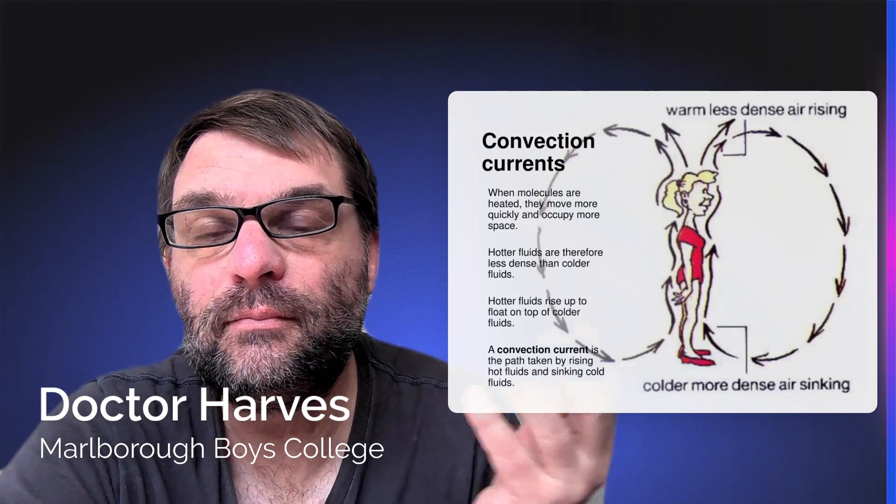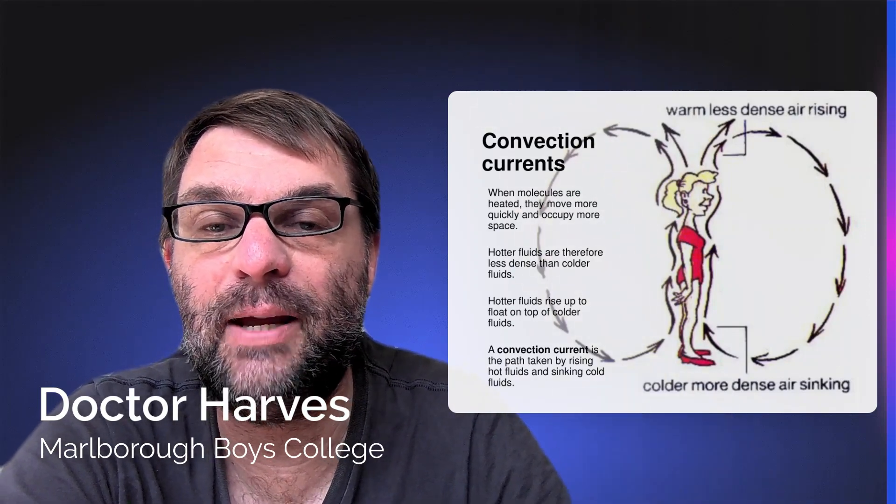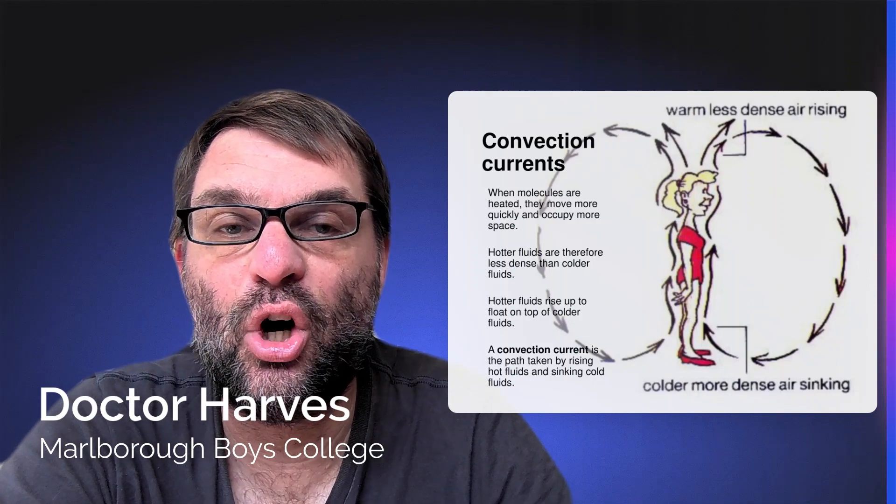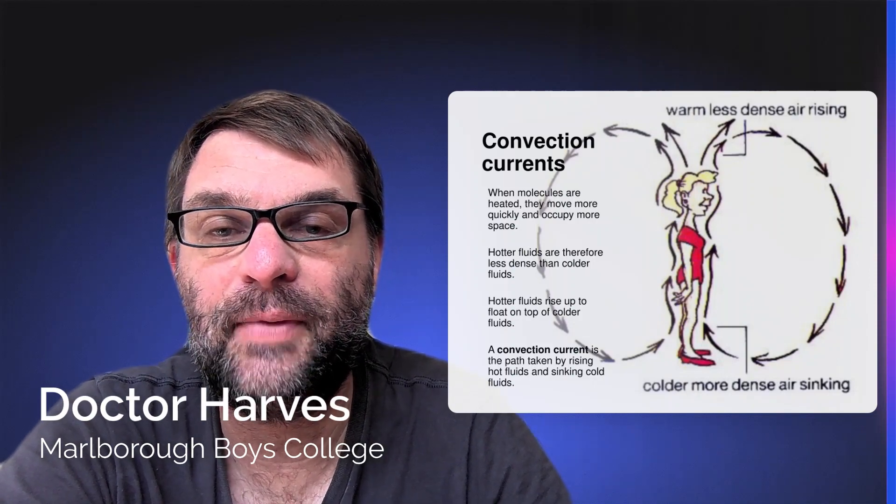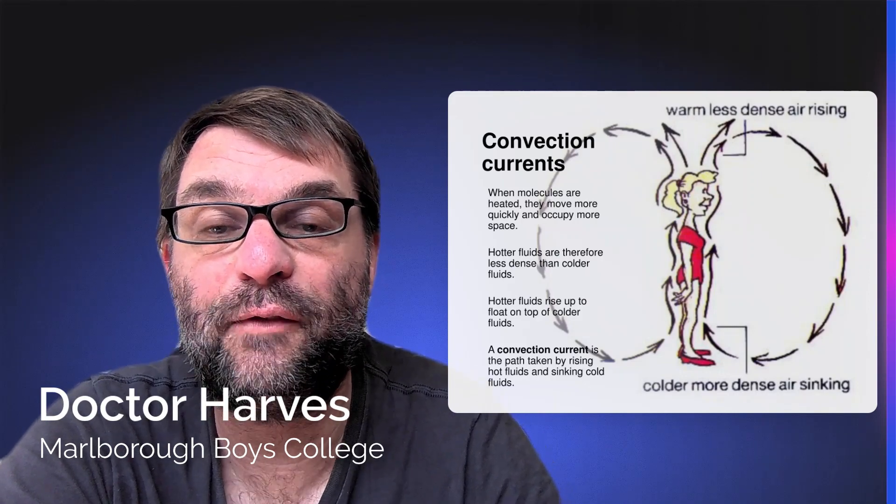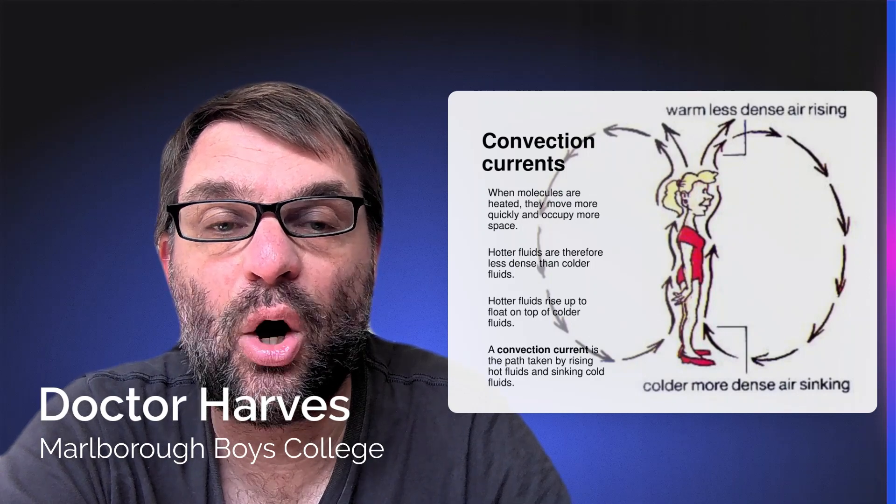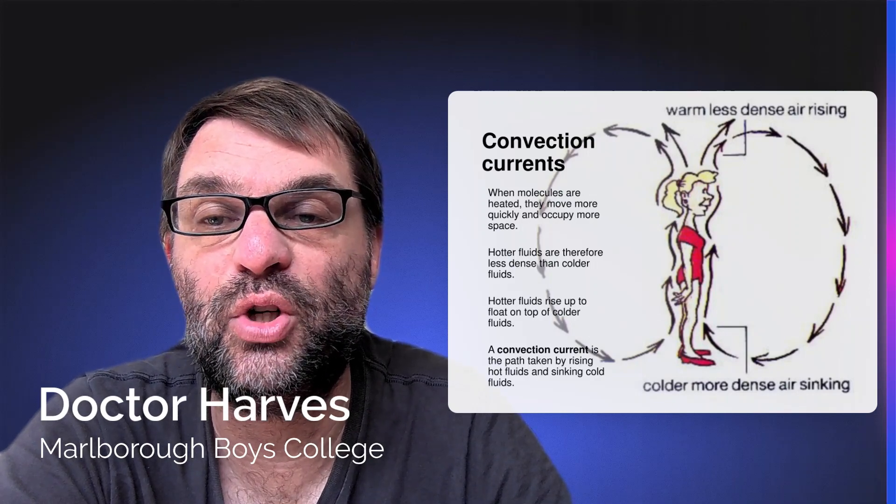Therefore the hotter fluids rise up, just like in hot air balloons, to the top of colder fluids. This creates something called a convection current, and it's the path of the rising hot fluids and the sinking denser cold fluids, because denser objects are heavier.